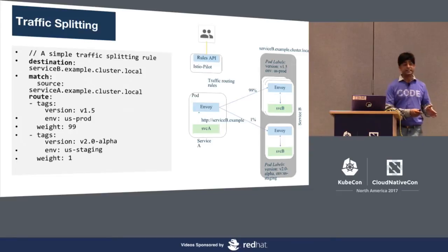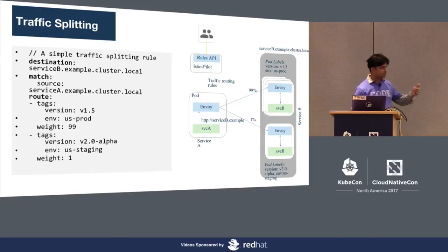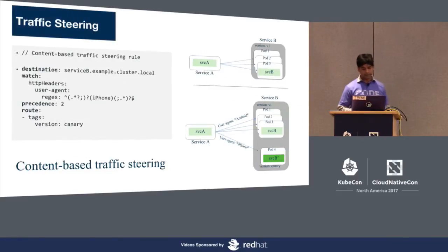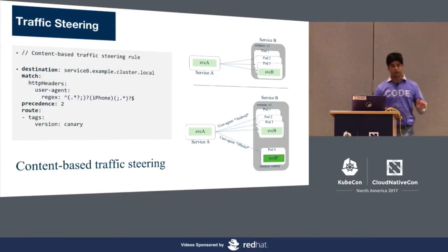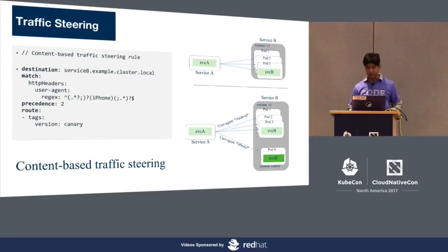For example, when you are rolling out a new version of your microservice, you don't want to redirect all the traffic to it immediately. You want to selectively control — a rule like 'send 1% of the traffic to this new version' ensures that if there is a fault in your new version, you can roll it back in a timely manner. You can steer traffic based on content, device type such as iPhone or Android, browser, or geographic location to a particular version of your microservice.